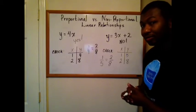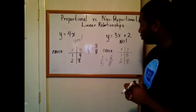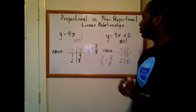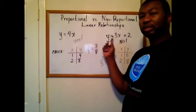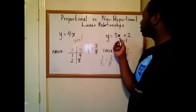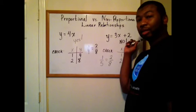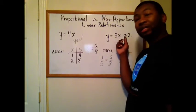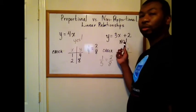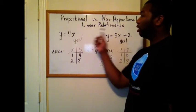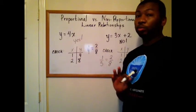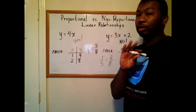There's a shortcut. When I look at these equations, the difference between these two equations, this is just y equals four times x. This is y equals three times x plus something extra. If it has plus something extra or minus something extra, it's not going to be proportional. If all you do is multiply by x, it's going to be proportional. That's a shortcut. Don't tell anybody.